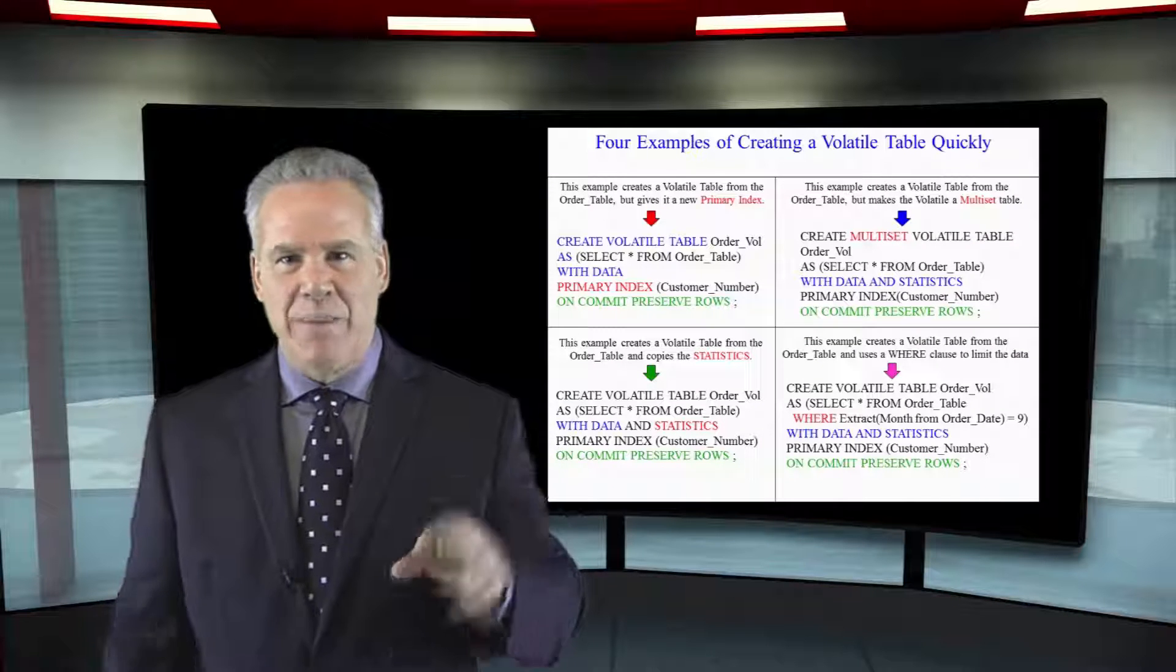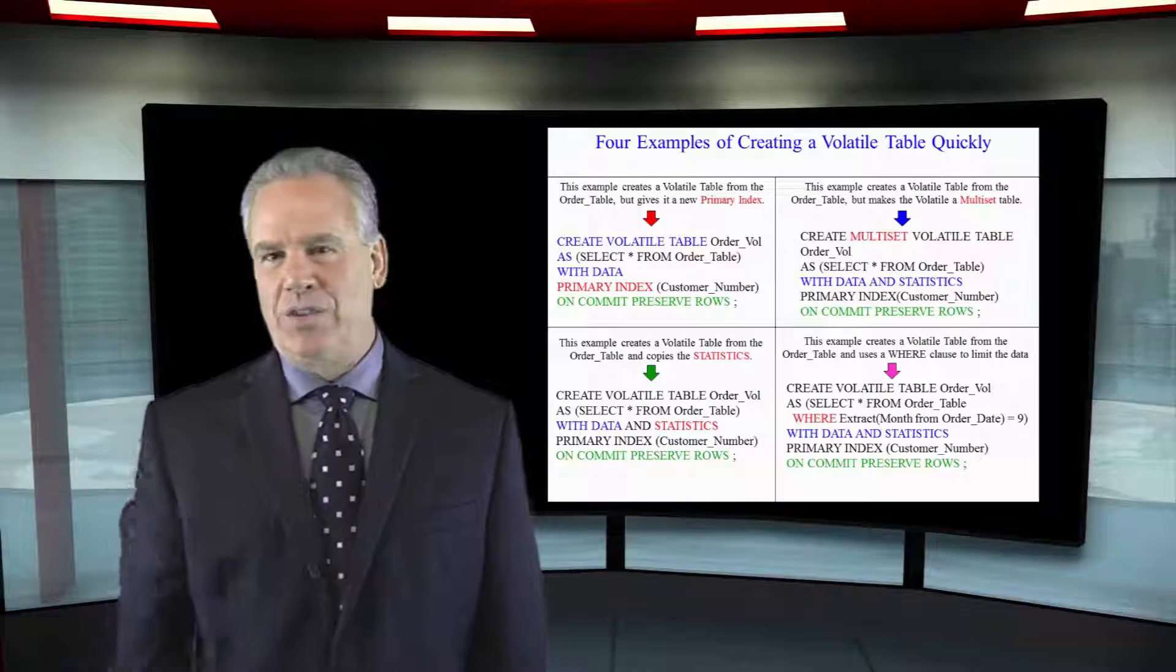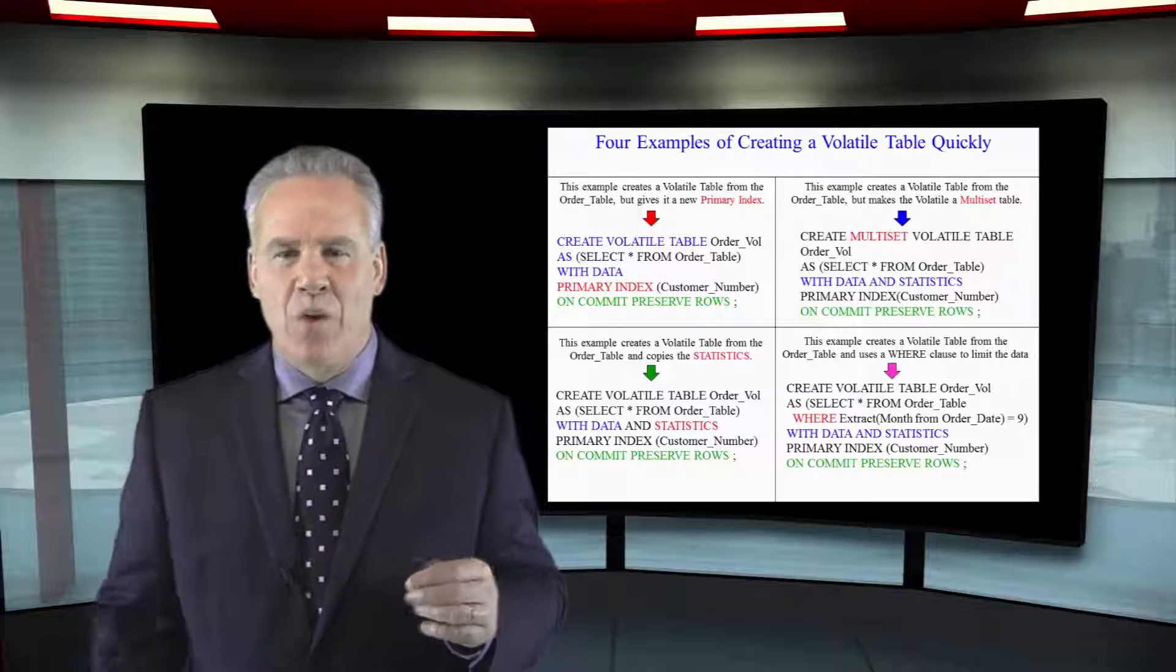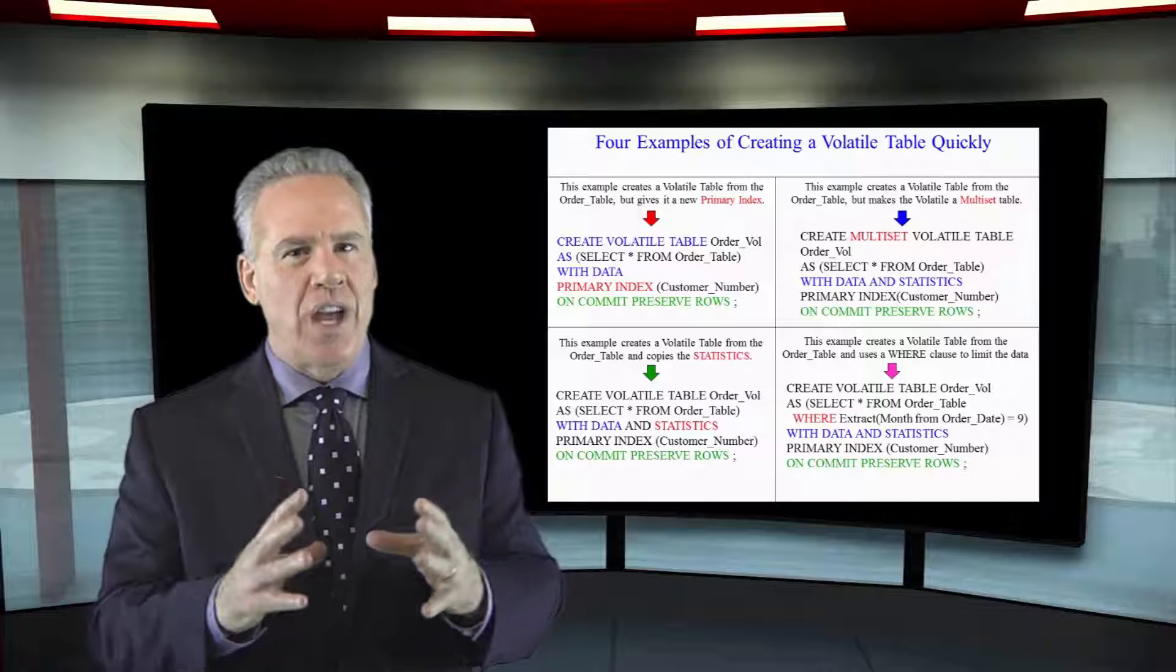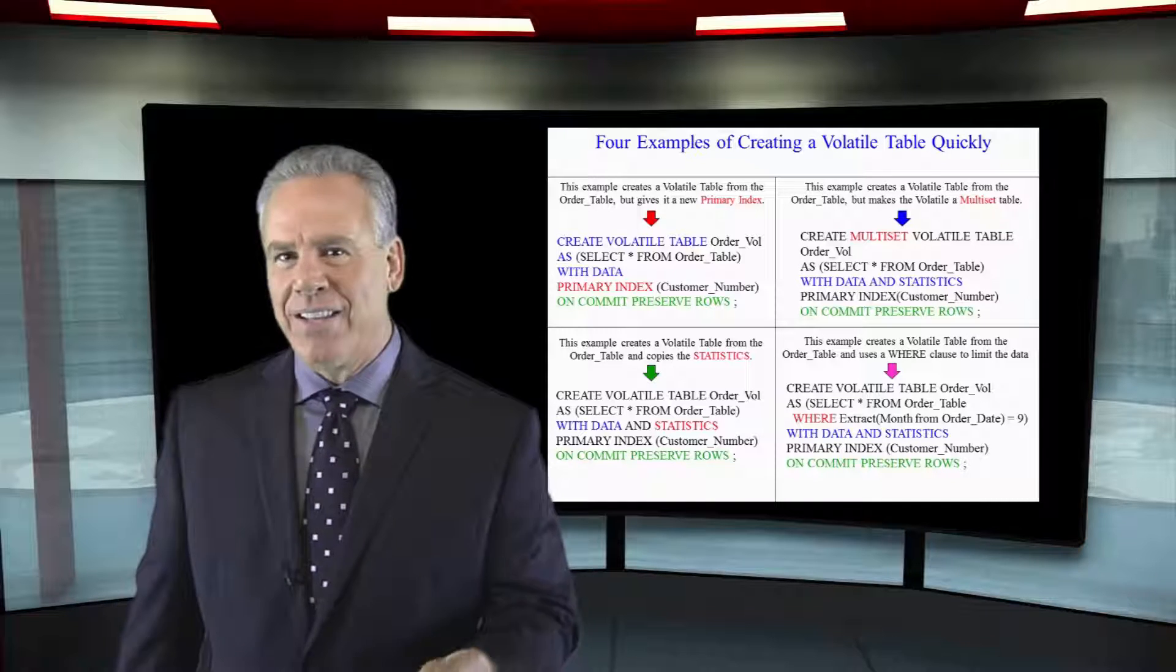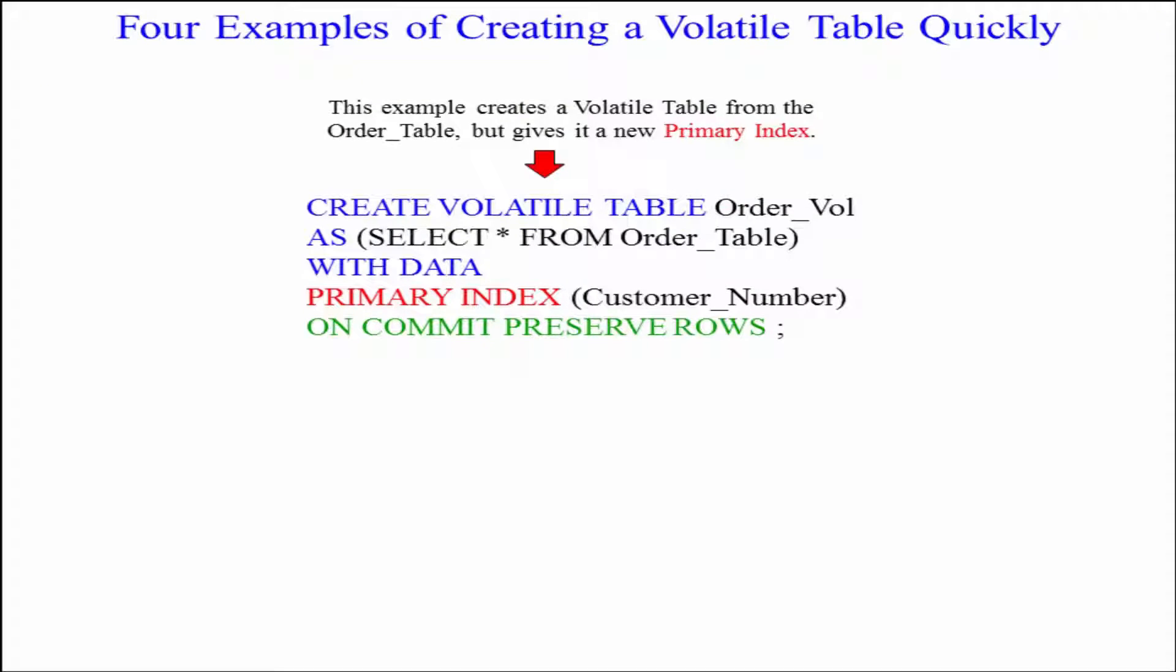Instead of creating a volatile table and then populating it with an insert select, here's four very clever examples where you can do it all in one shot. I call this a CTOS, create table as. Let's look at the first example with the red arrow.